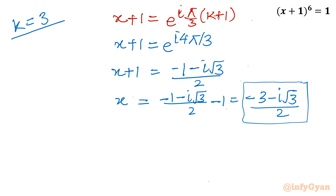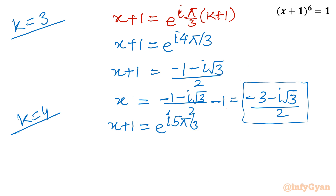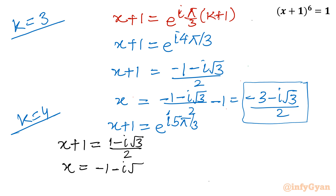For k equal to 4: x plus 1 equals e raised to i 5 pi over 3, where cosine is positive and sine is negative. So x plus 1 equals 1 minus i root 3 over 2. Taking away 1, x equals minus 1 minus i root 3 over 2. Again a complex solution.